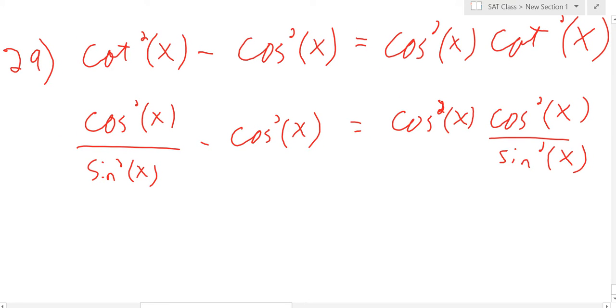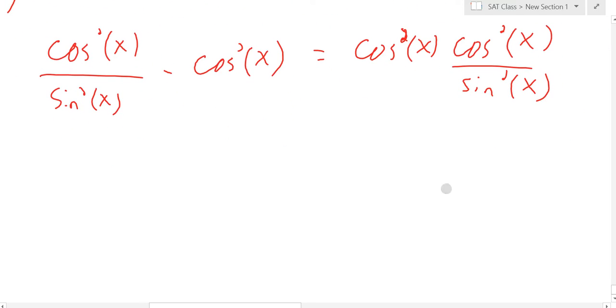I'm going to simplify the right-hand side just by putting it all together as one fraction. So that's going to become cosine to the fourth of x over sine squared. So that's my goal. I'm trying to get to that, right?